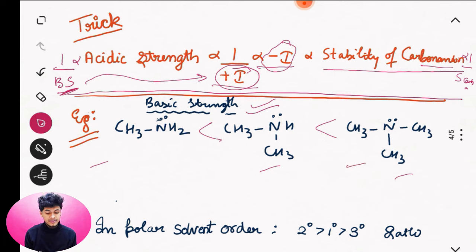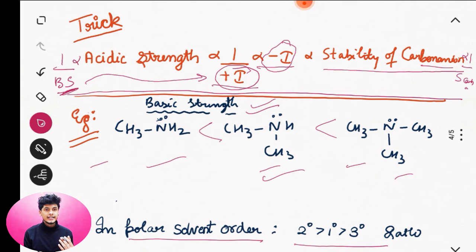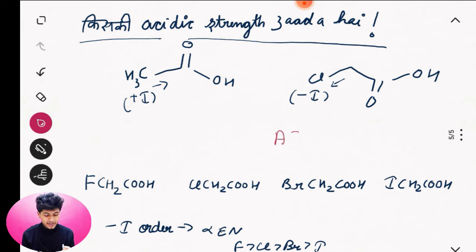This is a basic but important question. If you ask about order in a polar solvent, remember the exception: in polar solvent, the order is 2° greater than 1° greater than 3°. Now, acidic strength is directly proportional to Minus-I and inversely proportional to Plus-I. In the last slide, we have Plus-I giving less acidic strength, and Minus-I giving more acidic strength.